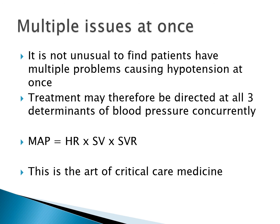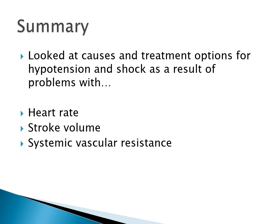It is not unusual to find patients with multiple problems of heart rate, stroke volume, and systemic vascular resistance all causing hypotension at once — your treatment may be directed at all three determinants of blood pressure simultaneously. This is the art of critical care medicine and can be a very difficult balancing act. In summary, we've looked at causes and treatment options for hypotension and shock related to heart rate, stroke volume, and systemic vascular resistance.